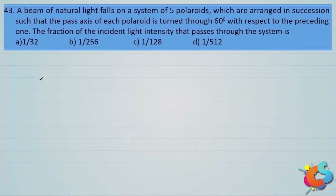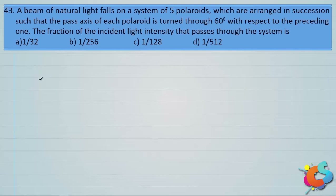Next question: A beam of natural light falls on a system of 5 polaroids arranged in succession such that the pass axis of each polaroid is turned through 60 degrees with respect to the preceding one. The fraction of the incident light intensity that passes through the system is: options A 1/32, B 1/256, C 1/128, and D 1/512.